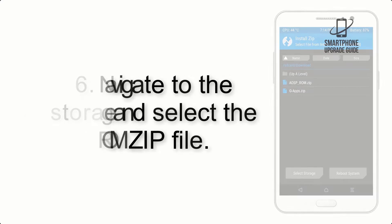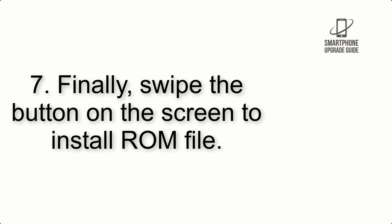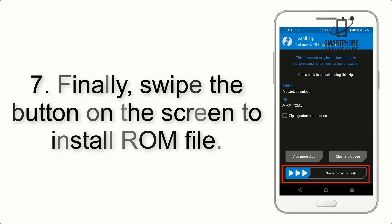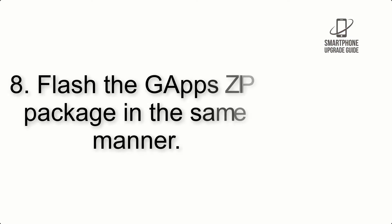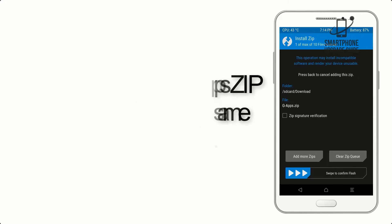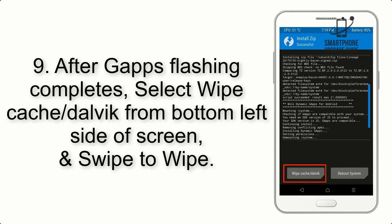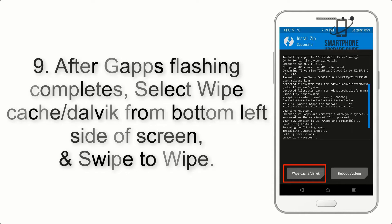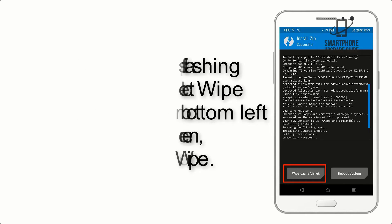Step 6: Navigate to the storage and select the ROM zip file. Step 7: Swipe the button on the screen to install the ROM file. Step 8: Flash the GApps zip package in the same manner. Step 9: After GApps flashing completes, select Wipe Cache and Dalvik from the bottom left side of the screen and swipe to wipe.